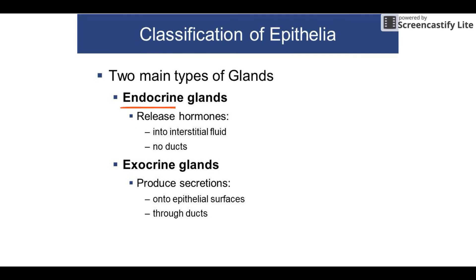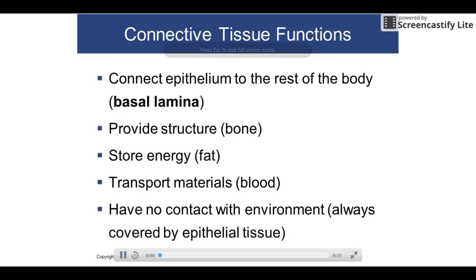There are two big types of glands. Endocrine glands are the ones that make hormones. Exocrine glands open up into ducts — these include things like your sweat glands. Anytime you hear endocrine, think hormones. Exocrine covers all the other secretions like saliva and so forth.